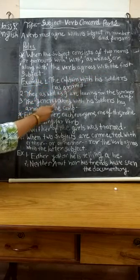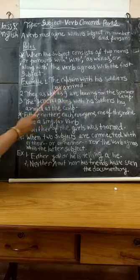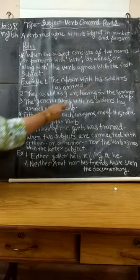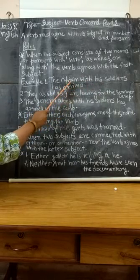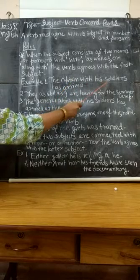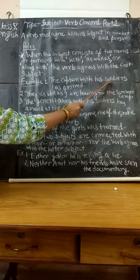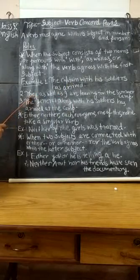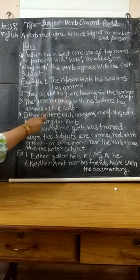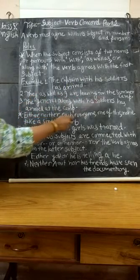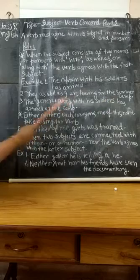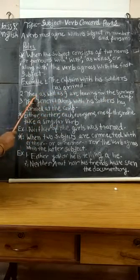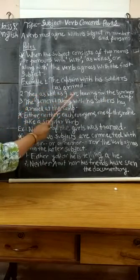Example: 'The captain with his soldiers has arrived.' We have used the verb according to 'the captain,' not according to 'the soldiers.' Second example: 'They as well as I are leaving for the summer camp.' We are using the verb here according to 'they' — they are.